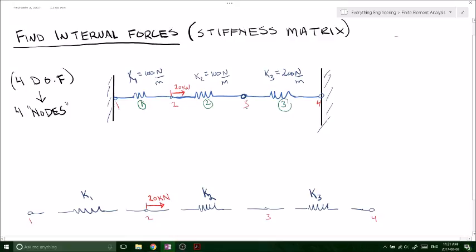Node number three has nothing, and nodes one and four we've got fixed end supports. If we remember what fixed end supports mean, that means u1 equals zero and u4 equals zero because they're fixed and no movement will occur. Now we know that there will be a u2 and there will be movement at node number three.